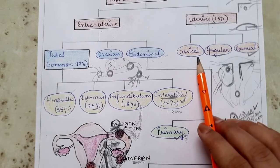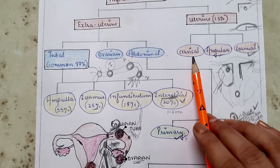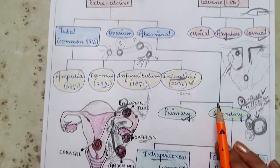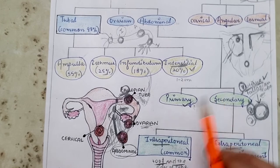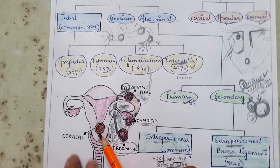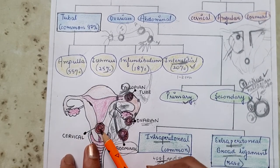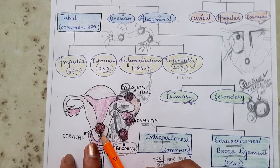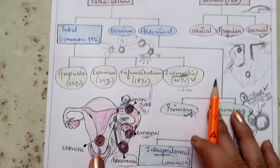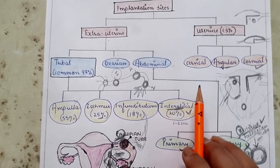The last intra-uterine site is cervical pregnancy, where the fertilized ovum implants at the cervix.